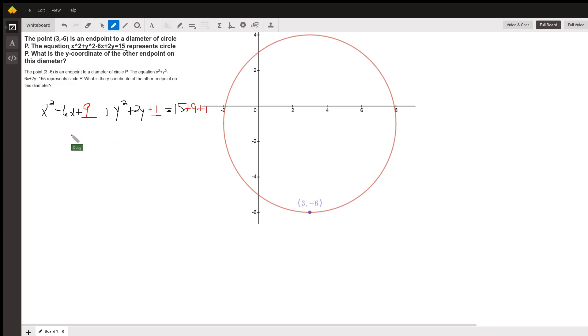And now this lets us put the equation in standard form for a circle. We can rewrite this perfect square trinomial as x minus 3, the quantity squared. This second trinomial as y plus 1, the quantity squared.